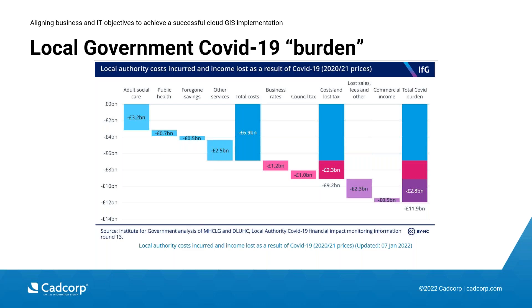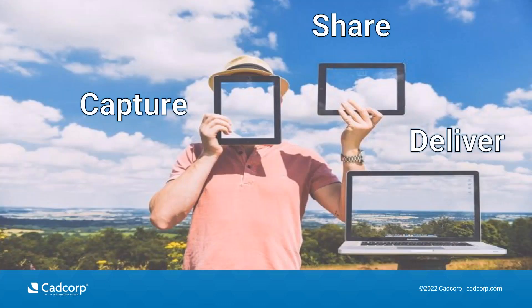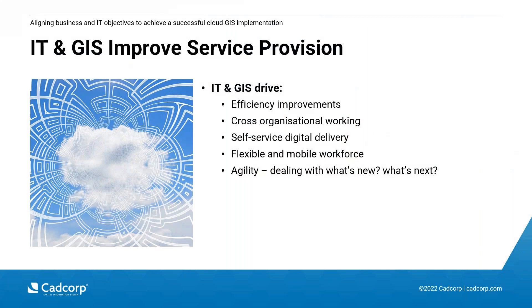In light of this, we want to look at how cloud GIS can help within these tightened budget restrictions. In GIS, we want to capture data, share data, and ultimately deliver services. Understanding and implementing a GIS in line with your business and IT objectives is particularly important. Both IT and GIS improve and drive service provision, improving efficiency and reducing costs, underpinning organizational change and cross-organizational working. They enable self-service digital delivery, a flexible and mobile workforce, and agility in dealing with new customer demands.